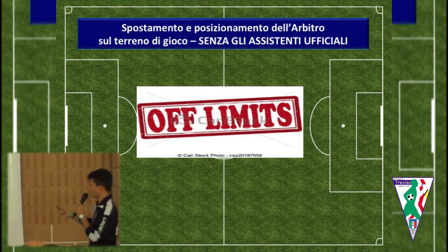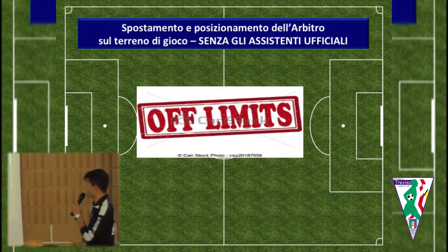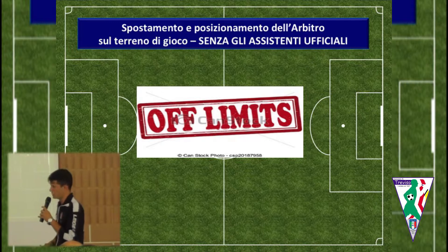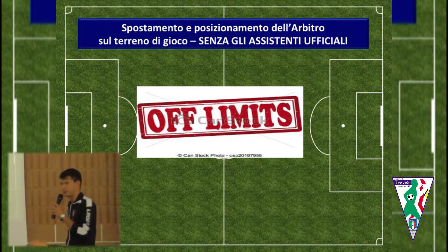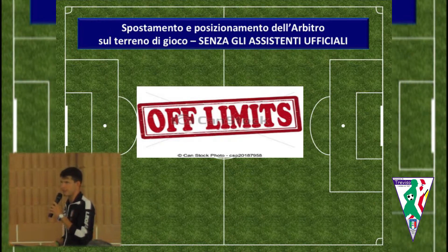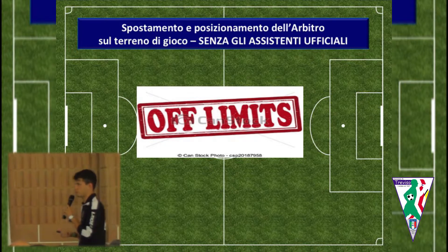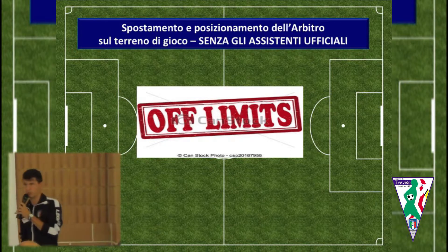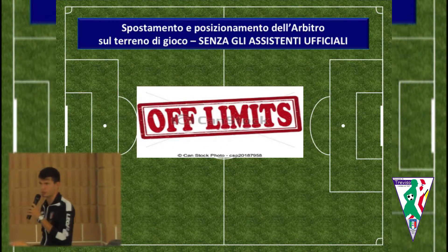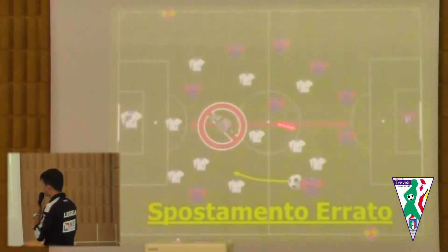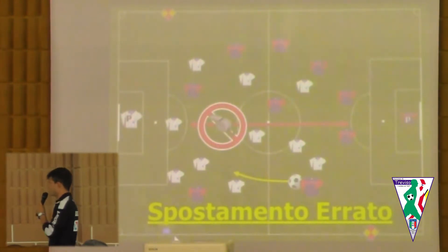Anche con gli assistenti vale questa cosa, però senza gli assistenti la zona centrale è off limits. La priorità dello spostamento senza assistenti è il fuorigioco: dalla fascia centrale potete avere occhio, potete avere esperienza, ma sia la credibilità che la posizione ideale per valutare mancano, non avete profondità. Lo spostamento centrale è da evitare, quello consigliato è lo spostamento laterale.